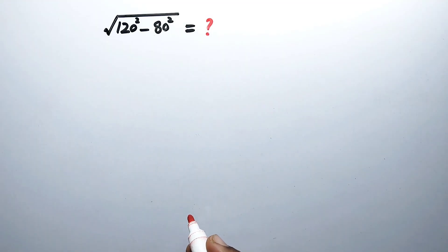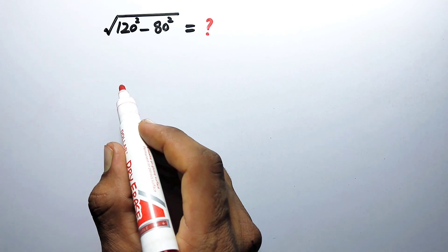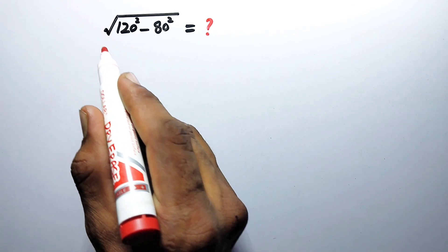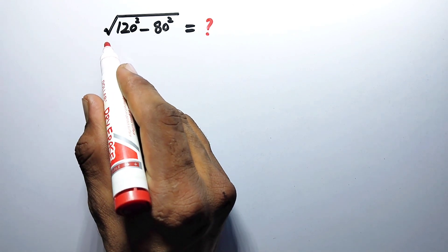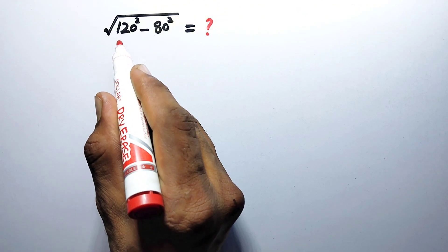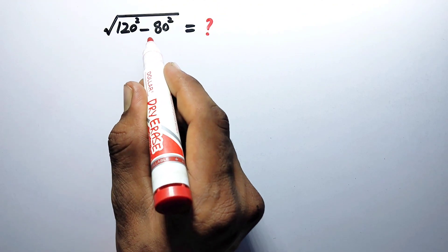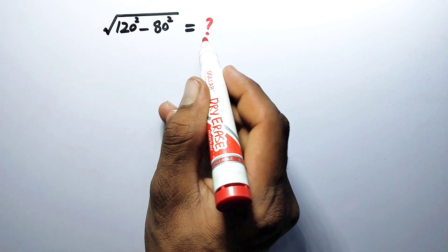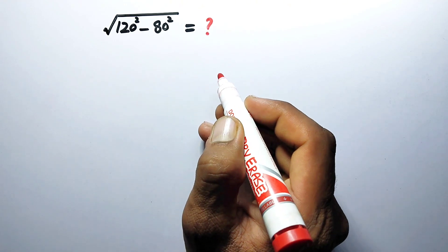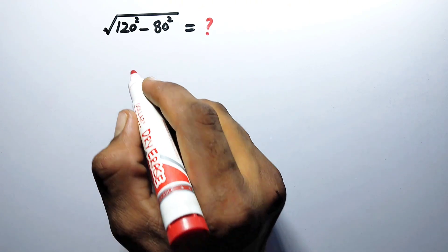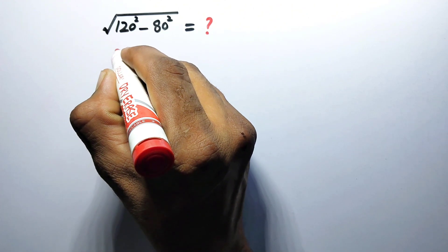Hello everyone and welcome to Explore Maps. In this video, we are going to simplify this problem: the square root of 120 squared minus 80 squared is equal to what? So let us see its simplification.